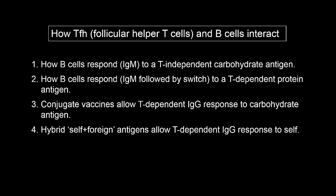In this video, we'll see how B cells get activated in four important different ways. The first two are normal responses to T-independent and T-dependent antigens. The third describes the trick used to allow a class-switched antibody response to a carbohydrate vaccine. The fourth is the mechanism whereby anti-self, that is, autoimmune B cells, can be activated if the self-antigen gets coupled to a foreign protein.